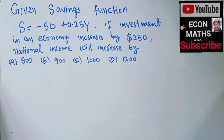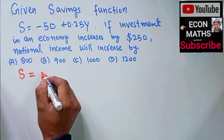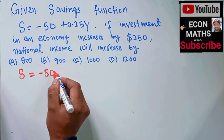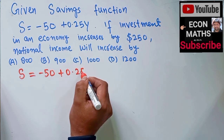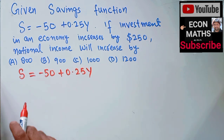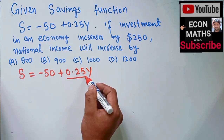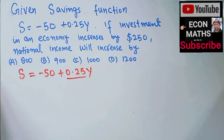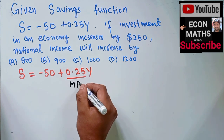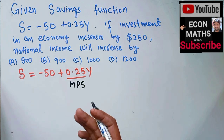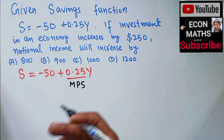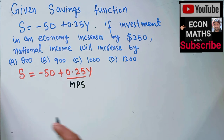We are given the savings function S = -50 + 0.25Y. This simply tells us that savings is a positive function of income, and 0.25 is actually the marginal propensity to save — that is, how much we save when there is a one-unit increase in income.